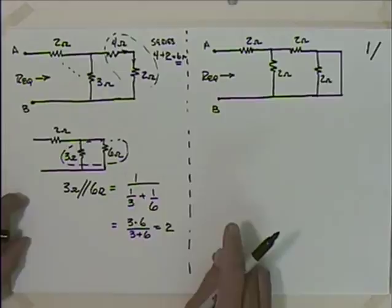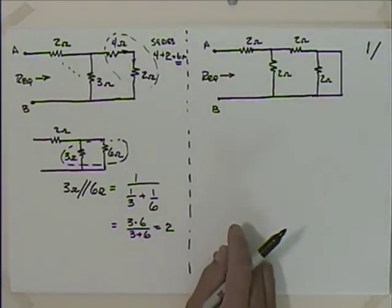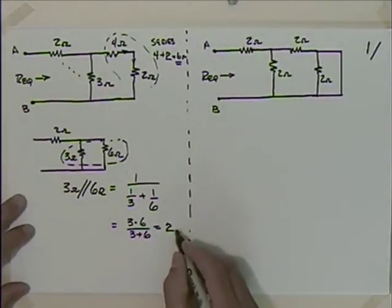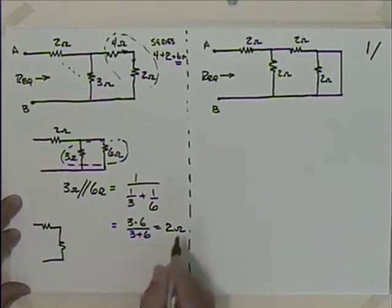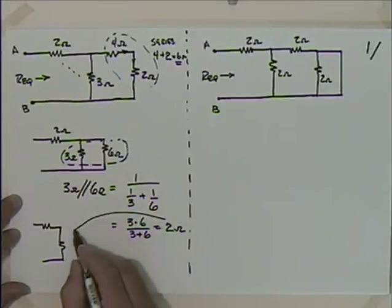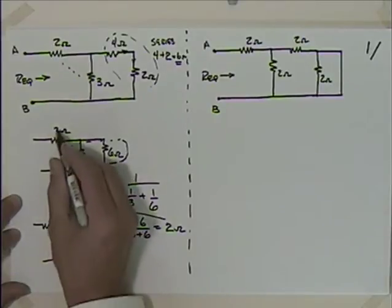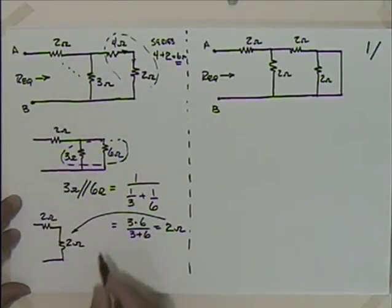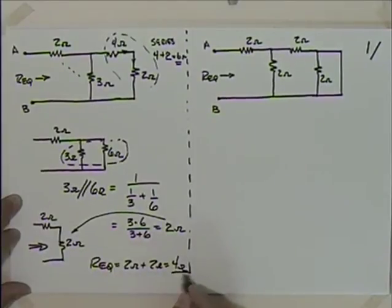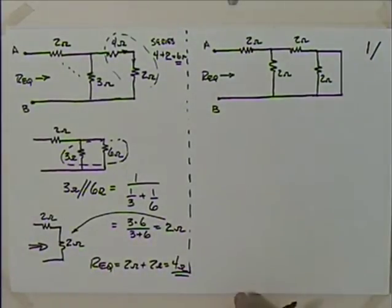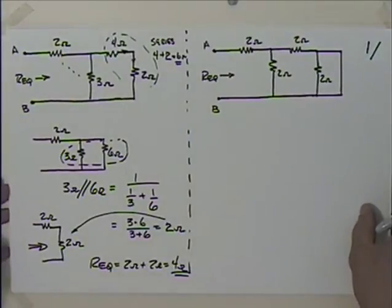We can calculate 3 in parallel with 6 as 1/3 plus 1/6, or product over sum: 3 times 6 divided by 3 plus 6 equals 18 over 9, which is 2 ohms. So I redraw again with the original 2 ohms and this new 2 ohms, and the equivalent resistance is simply 2 ohms plus 2 ohms equals 4 ohms. Practice this type of problem — once you get used to it, it's really pretty easy.